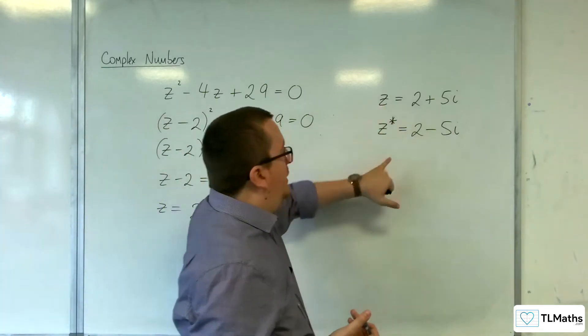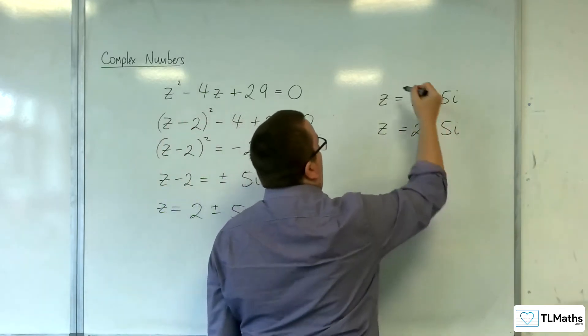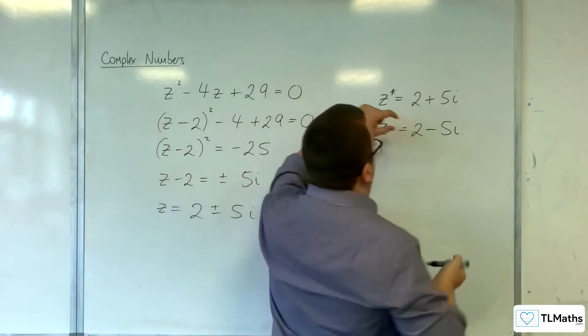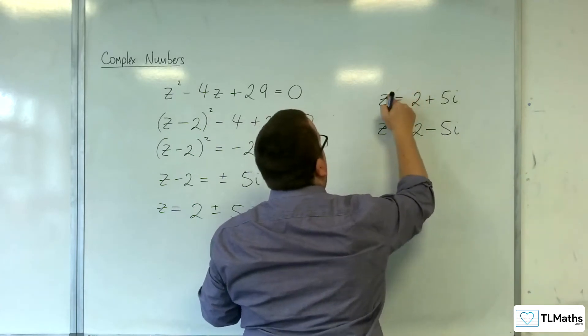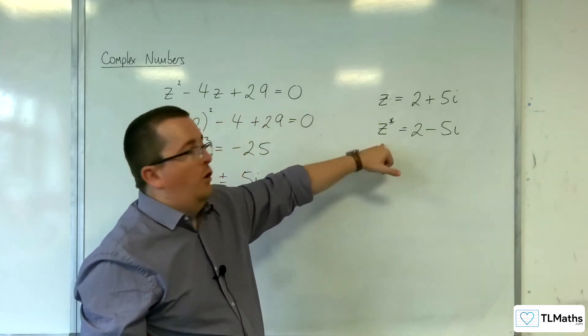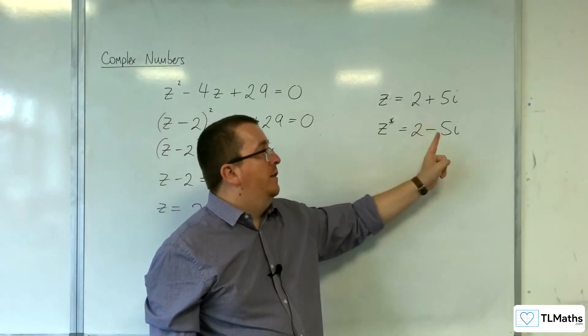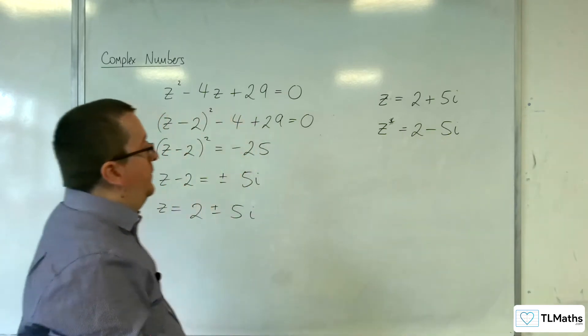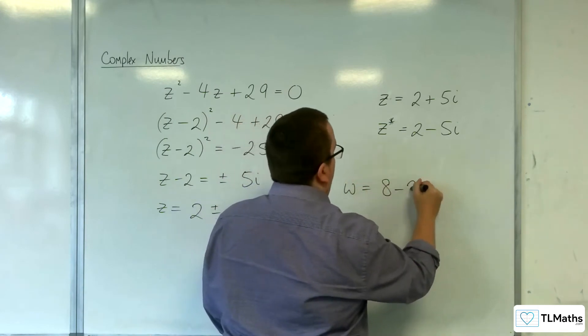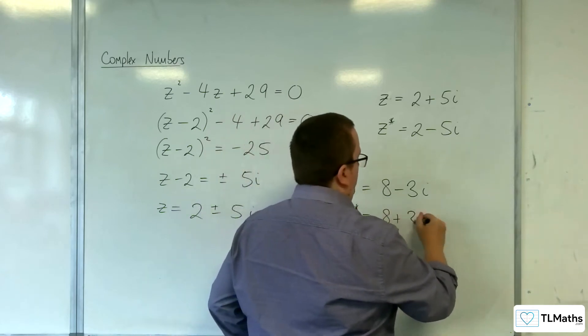It didn't matter which one I labeled as z and z*. I could very easily swap those around. What you need to understand is that if I am asking for the complex conjugate of a complex number, then all that's going on is I'm changing the sign of the coefficient of i. So for example, if w = 8 - 3i, then the complex conjugate of w is 8 + 3i.